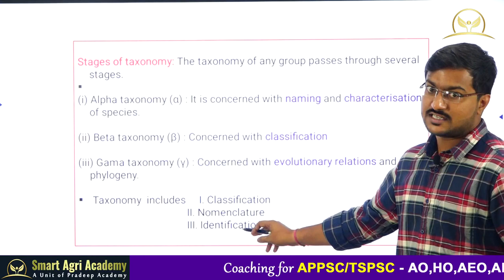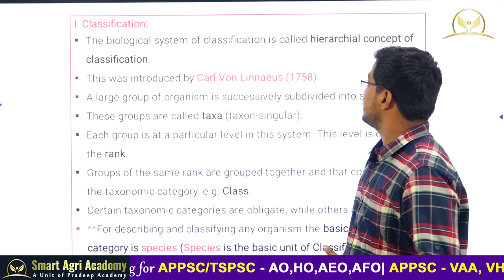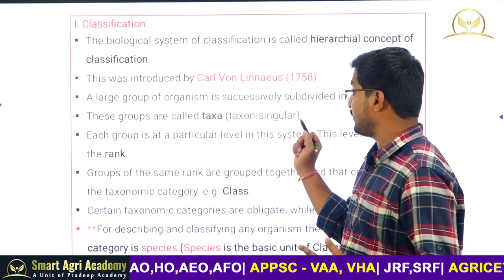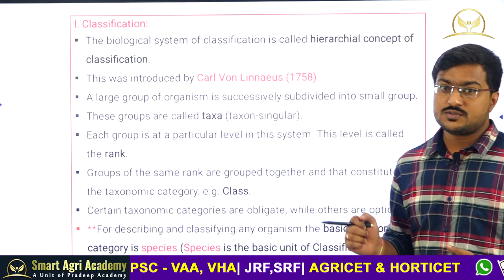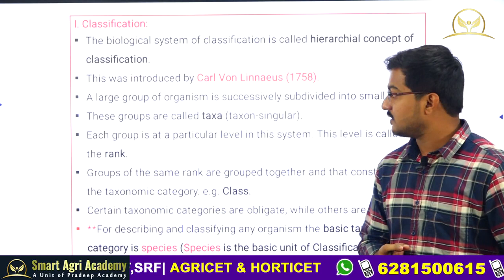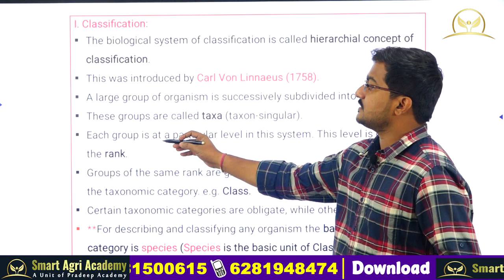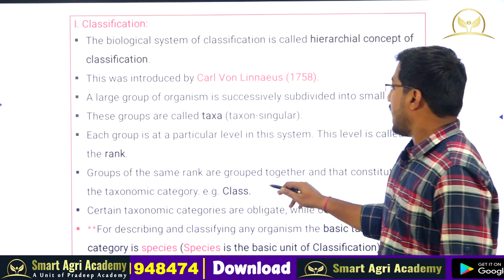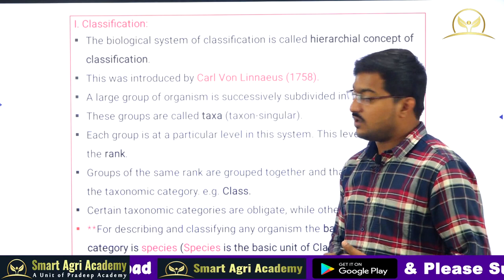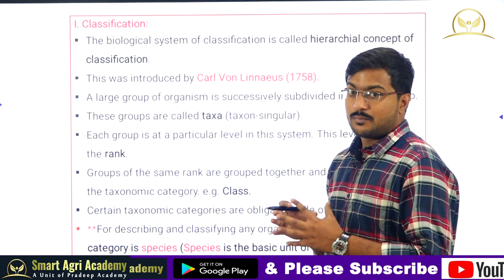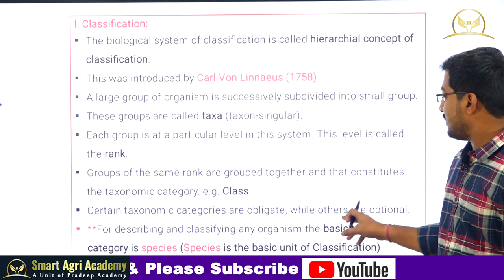The biological system of classification is called the hierarchical concept of classification, introduced by Carl von Linnaeus in 1758. A large group of organisms is successively subdivided into small groups called taxa (singular: taxon). Each group is at a particular level in the system, called the rank of a taxon. Groups of the same rank are grouped together to constitute a taxonomic category called a class. Certain taxonomic categories are obligate while others are optional.